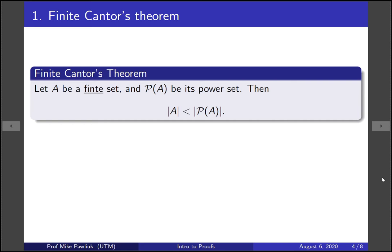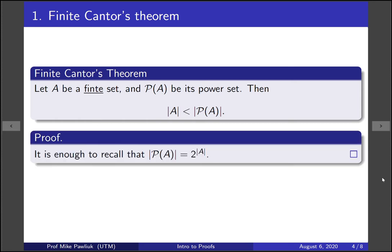Let's start with the finite version of Cantor's Theorem. Let A be a finite set, and let P be its power set. Then A has fewer elements than P. Now in this context it's much easier, so for the proof it's enough to observe that for a finite set the power set has two to that many elements. So basically here you're counting everything.